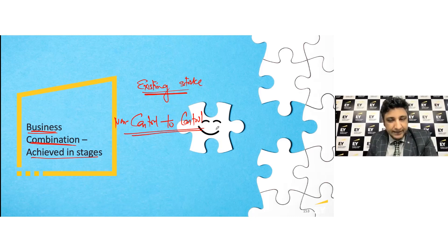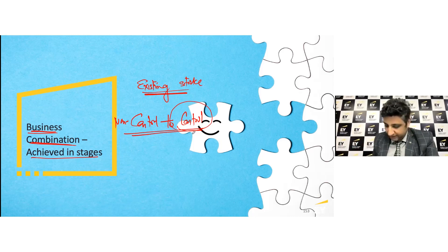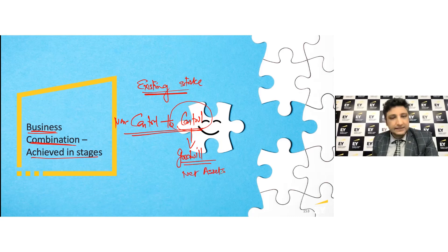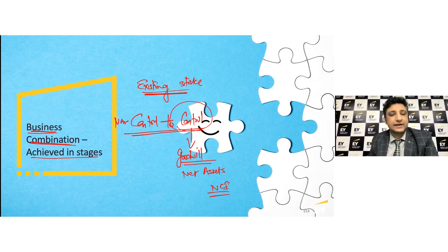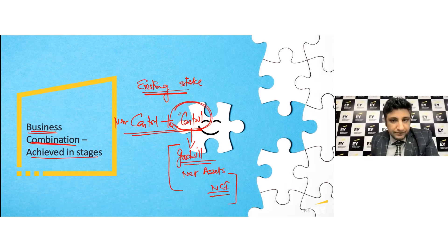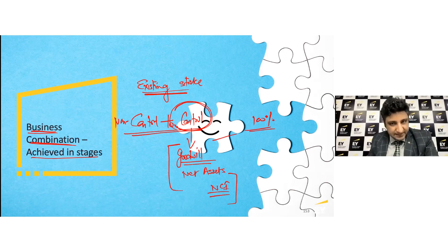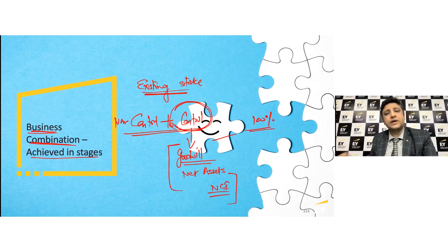You want to remember: the day you assume control is when you recognize the business combination. On that date you shall do the accounting for goodwill and consolidate the net assets of the other entity. There is a possibility of not having a 100% stake, so on the same date you would also recognize the non-controlling interest. This happens when you have assumed control, which suggests you now have control over 100% of that business even though you may not own 100% of its shares.